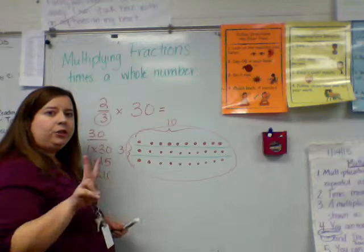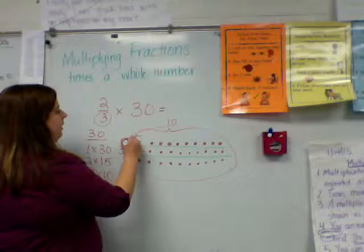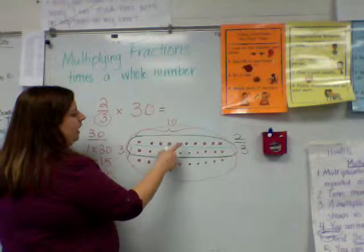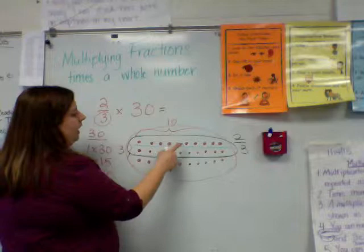But I don't need to know one-third — I need to know two-thirds. So what I'm going to do is circle that two-thirds-sized piece, and then I'm going to count: 1, 2, 3, 4, 5, 6, 7, 8, 9, 10, 11, 12, 13, 14, 15, 16, 17, 18, 19, 20. So two-thirds of 30 is 20 with the visual picture.